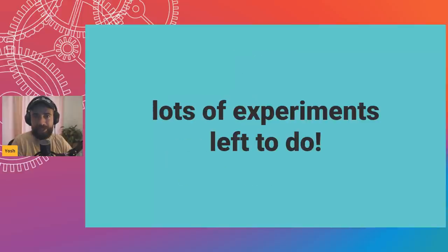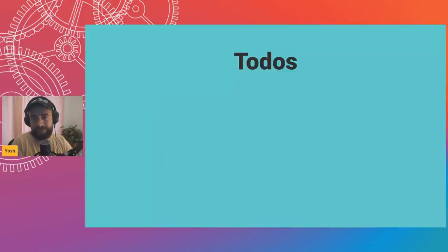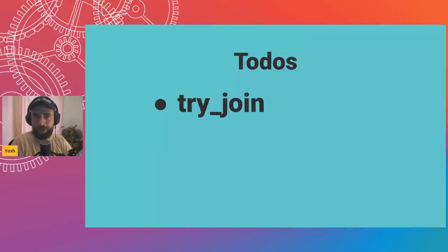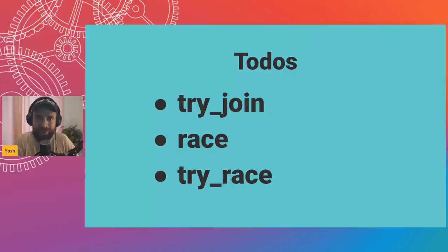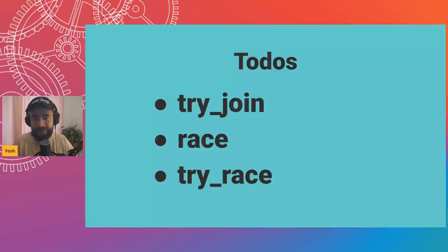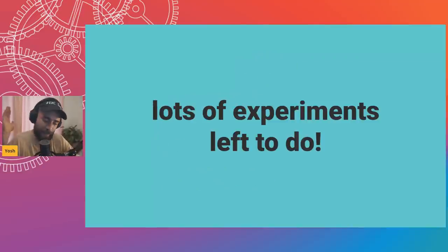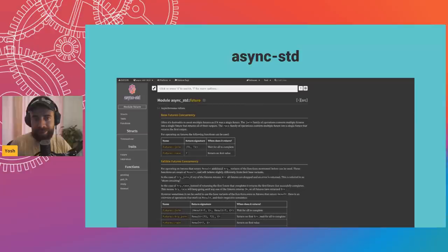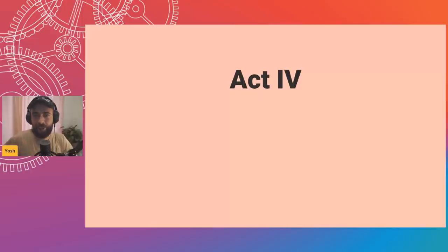What does the implementation look like today? The Join trait has a single method that returns a future, implemented manually for a bunch of tuple sizes, for Vec, and for arrays. We don't have the other methods quite implemented yet. Open questions include: is this the right trait? How do we move it into std? There's a working theory we can move it in today but need to seal it for forward compatibility. Try_join has fun design implications too. But if you want to use this mode of concurrency today, it is fully implemented in async-std.